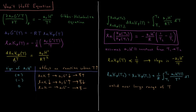Multiplying both sides by dT, we have d(ln Kp) equals the enthalpy change of reaction divided by RT² times dT. Everything depending on Kp is on one side and everything depending on T is on the other, so we can integrate with separation of variables. We integrate from ln Kp(T1) to ln Kp(T2) on the left, and from T1 to T2 of ΔH°/RT² dT on the right.